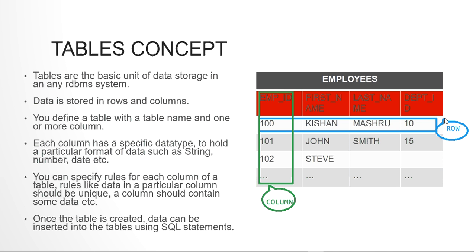A table is the basic unit of data storage in any RDBMS system. A table has a fixed number of columns and n number of rows. Here I have shown a diagram of a table called 'employees' which has employee ID, first name, last name, and department ID columns.